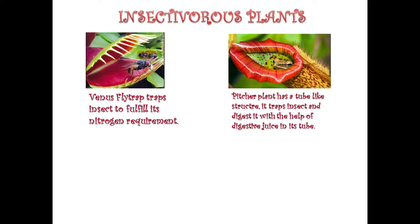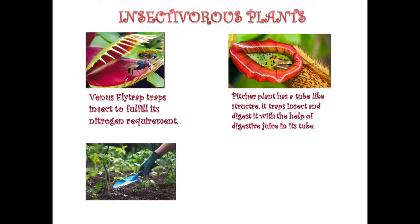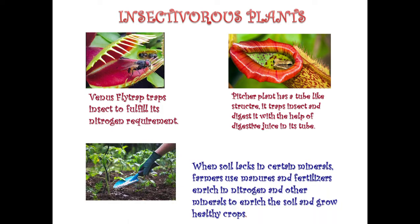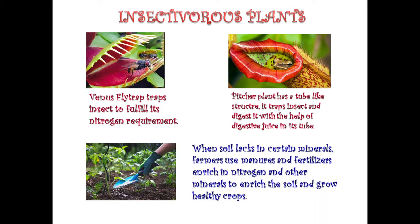Both the Venus flytrap and pitcher plant can carry out photosynthesis but are unable to take nitrogen from the air, so they trap insects for soluble nitrogen. For plants that lack Rhizobium bacteria and cannot trap insects, we add manures and fertilizers to the soil so they can be enriched with nitrogen and minerals and grow healthy crops.